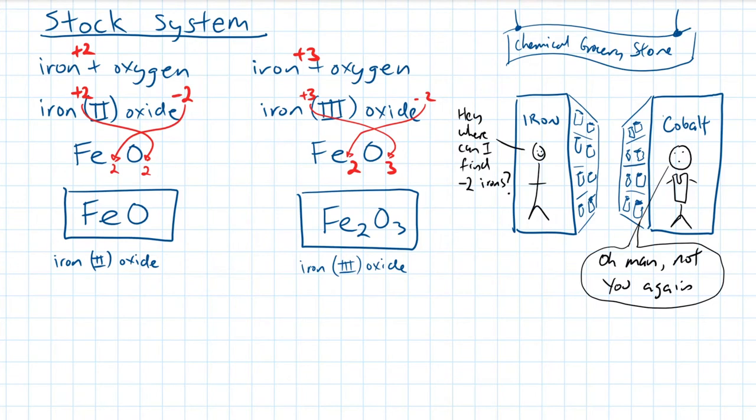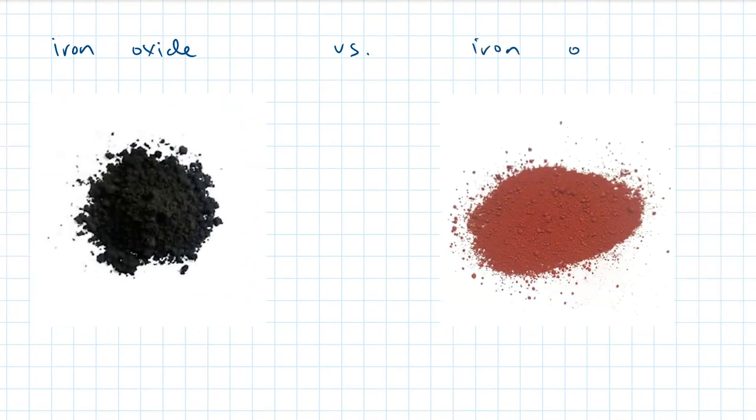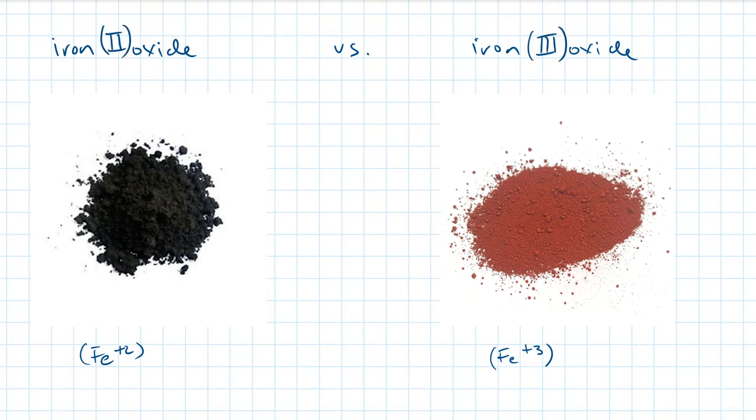Remember, if the metal is multivalent, you have to write down Roman numerals and its nomenclature. Otherwise, the reader will have no idea which version you are referring to. Take a look at these two images. They're both iron oxide. The one on the left contains iron plus 2, and the one on the right contains iron plus 3. Even though both compounds are iron oxide, they have very different visual appearances. So that's why it is important to include the Roman numerals in its nomenclature. Otherwise, the compound will be a complete mystery to the reader.